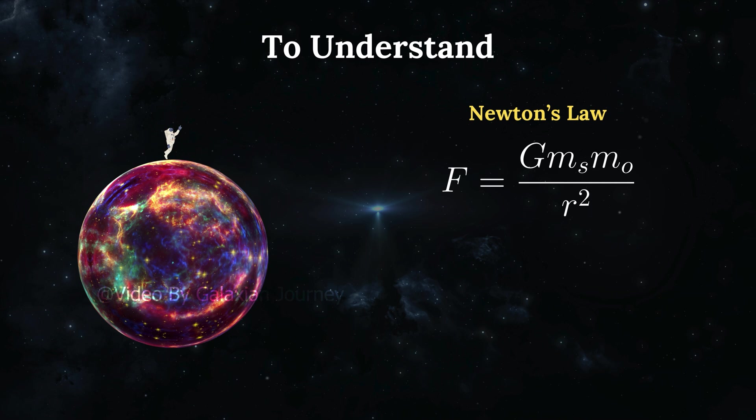Given that the object is tiny, we can neglect its mass and distance from the center. In this case, gravitational force becomes directly proportional to the mass of the star and inversely proportional to the square of its radius.